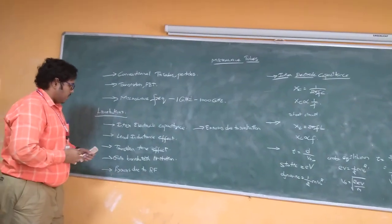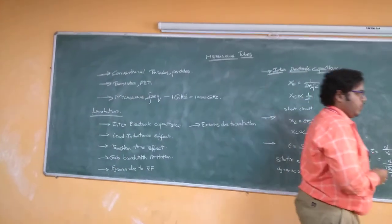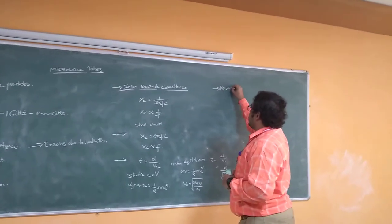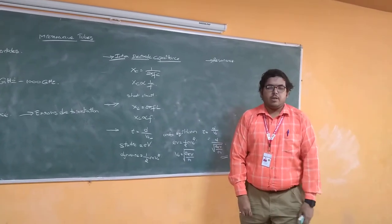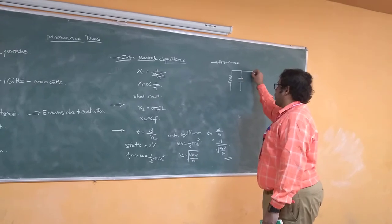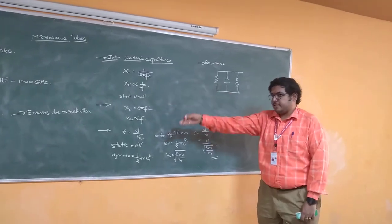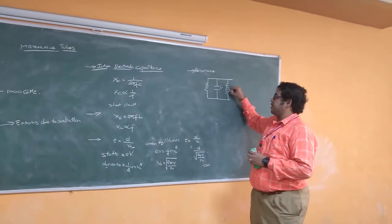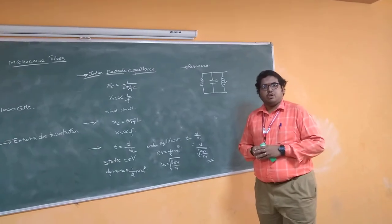The fourth effect is gain-bandwidth limitations. Gain-bandwidth calculation is done using a resonance effect. In a particular circuit, the bandwidth of the signal is calculated by resonance. The basic resonance circuit consists of a resistor, a capacitor, and an inductor. As discussed in the first and second points, there are certain limitations from the capacitor and inductor usage, so automatically the gain produced by the bandwidth will also be reduced using a conventional tube.